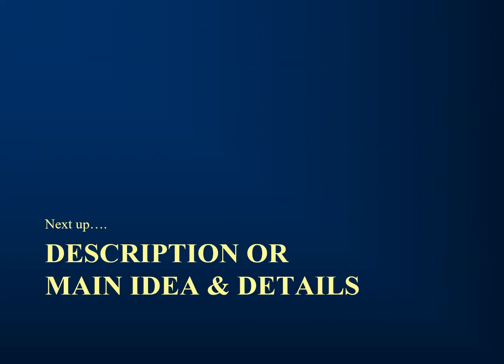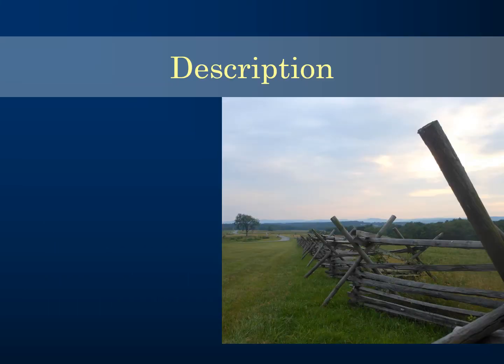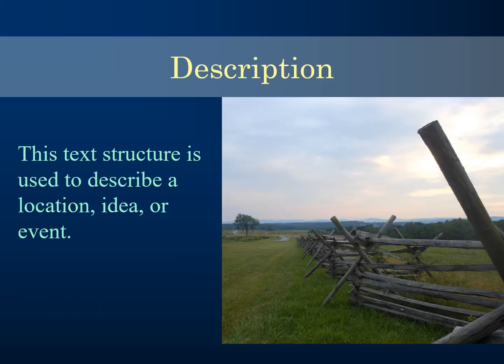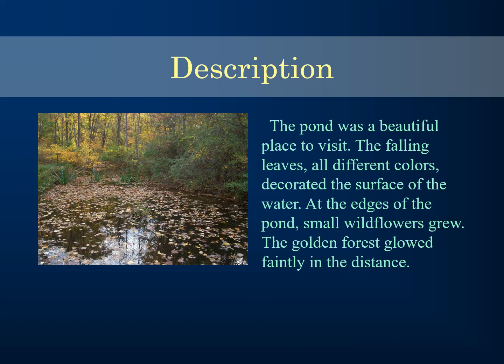Now let's get into description, or main idea and detail. This text structure is used to describe a location, idea, or event. Here's an example: 'The pond was a beautiful place to visit. The falling leaves, all different colors, decorated the surface of the water. At the edges of the pond, small wildflowers grew. The golden forest glowed faintly in the distance.'